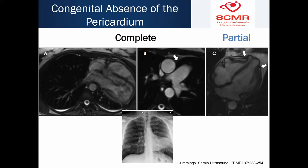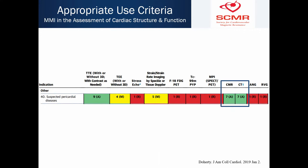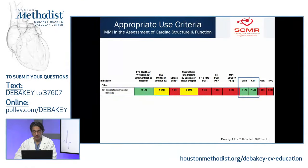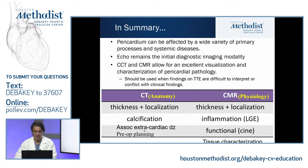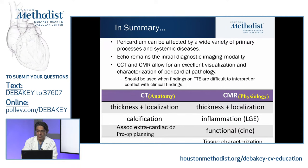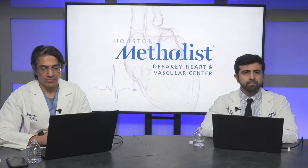We also discussed congenital absence of the pericardium — the 'snoopy dog' appearance — which can be complete or partial. CT and CMR are considered appropriate for suspected pericardial diseases. To summarize: echo is the mainstay providing tremendous information; when unsure or needing further characterization, consider CT and CMR. CT is fantastic for anatomy and preoperative planning and is the best tool for calcification. CMR offers both anatomy and physiology, plus the added benefit of assessing inflammation to guide management and monitor therapy. Thank you very much.